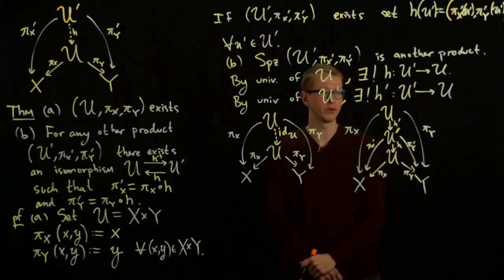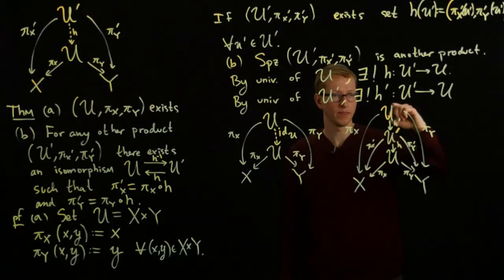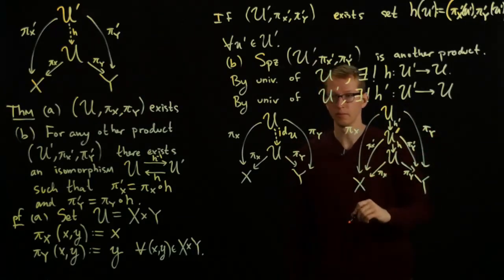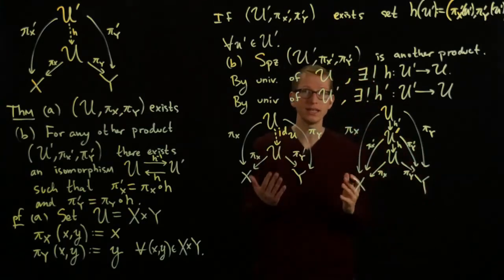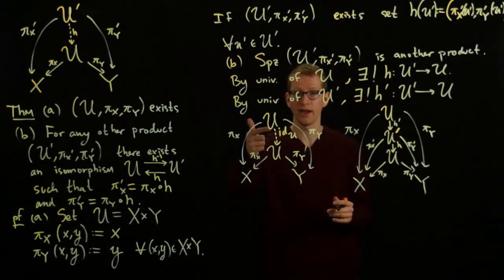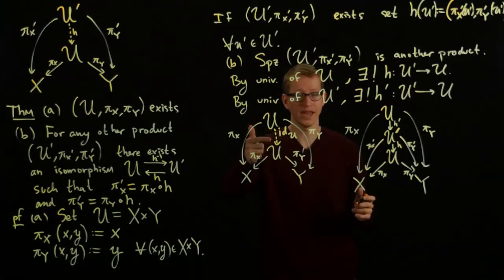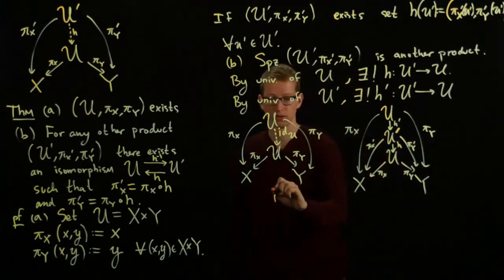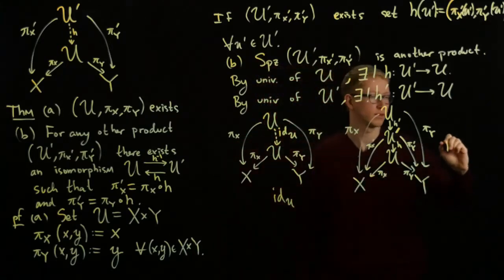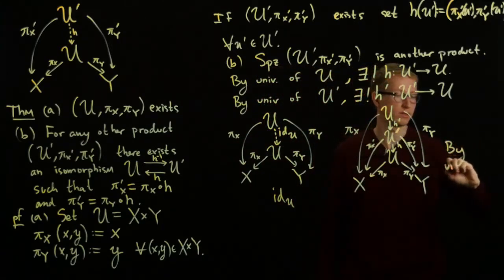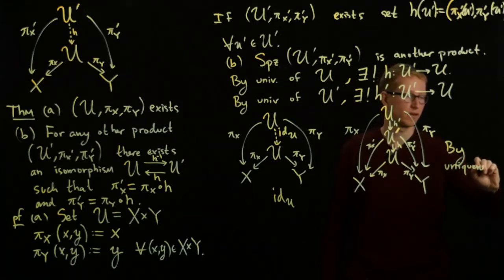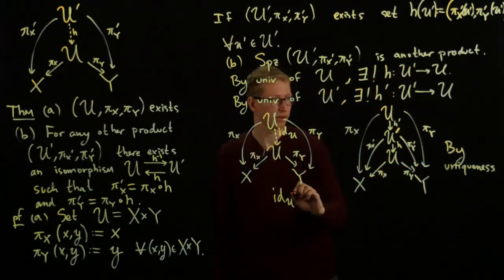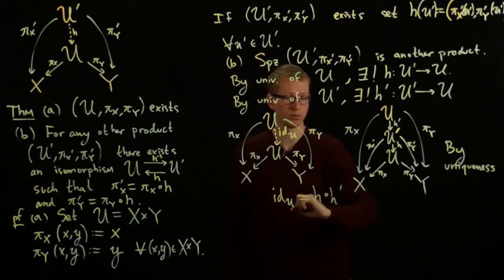But what else do we know is true by universality? So we know that this composition is equal to this one. But, by the uniqueness from the universality condition, I know that this composition has to be exactly the same as this one. In other words, the identity at U by uniqueness. By uniqueness. From the universality for U, the identity at U equals H composed of H prime.